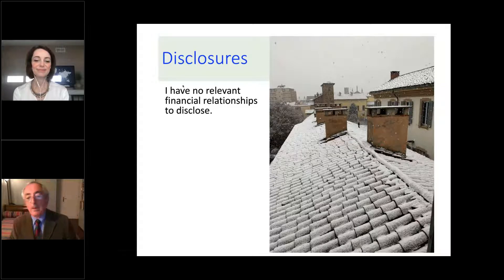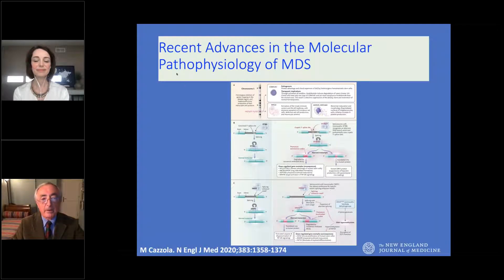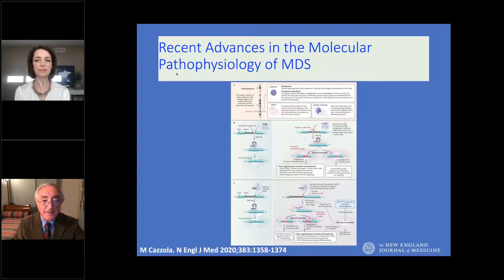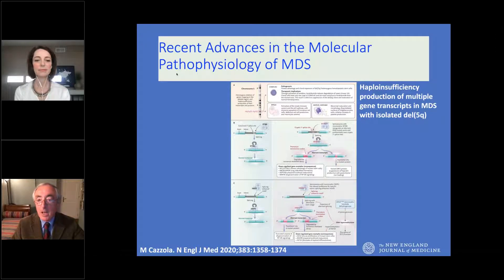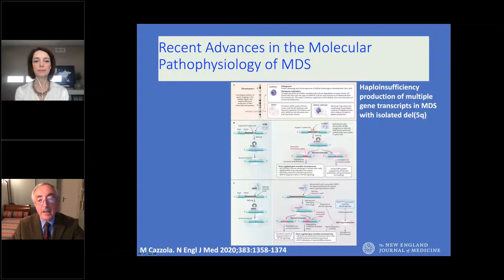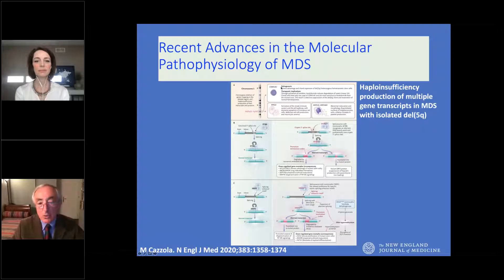There have been a lot of advances in the molecular pathophysiology of MDS in recent years. With respect to MDS on deletion 5Q, haploinsufficiency of multiple gene transcripts has been the major pathogenetic mechanism, and haploinsufficiency of casein kinase 1A1 explains both the pathogenesis and the response to lenalidomide.